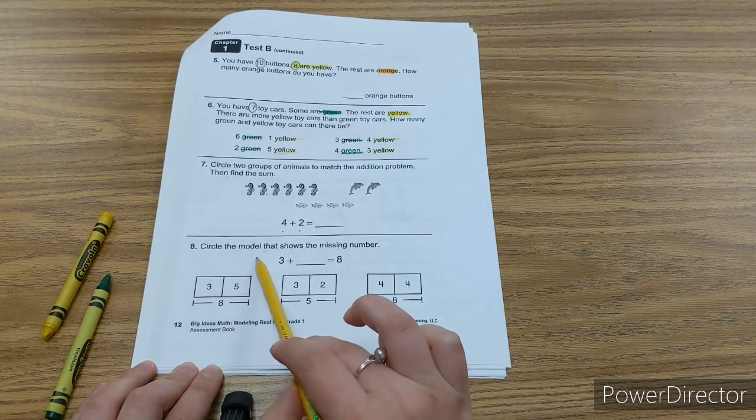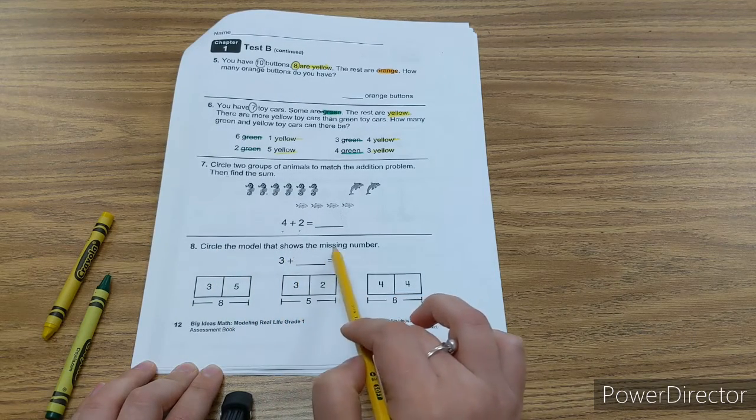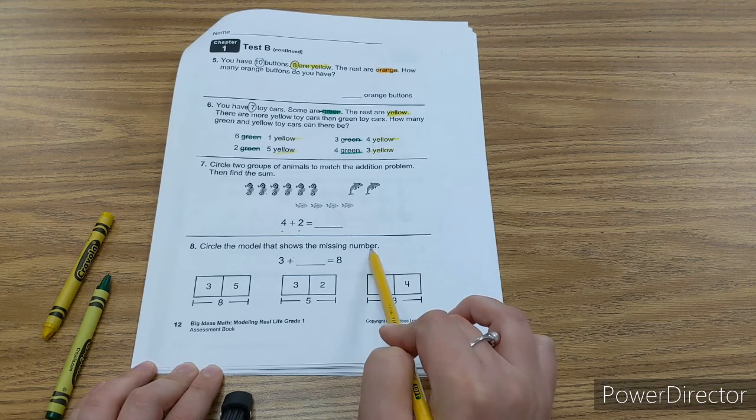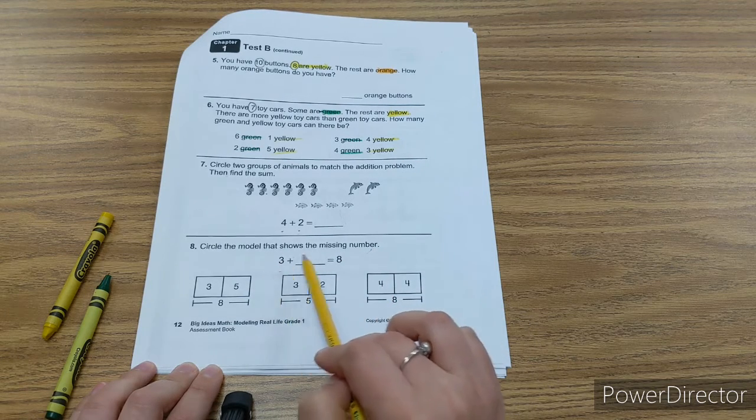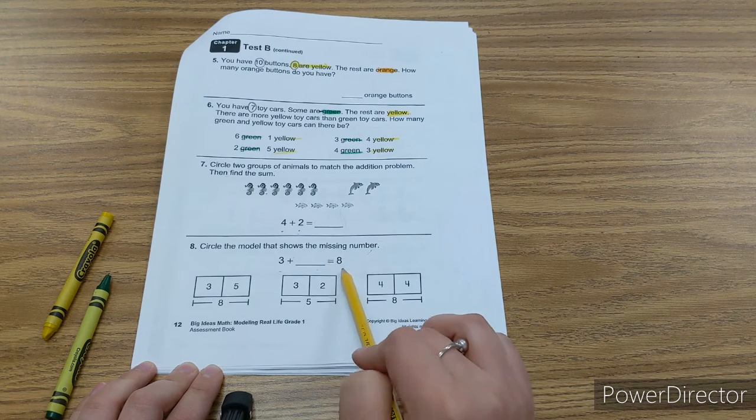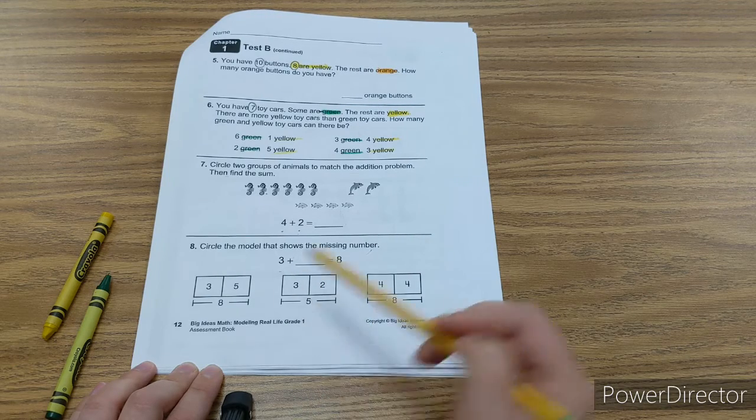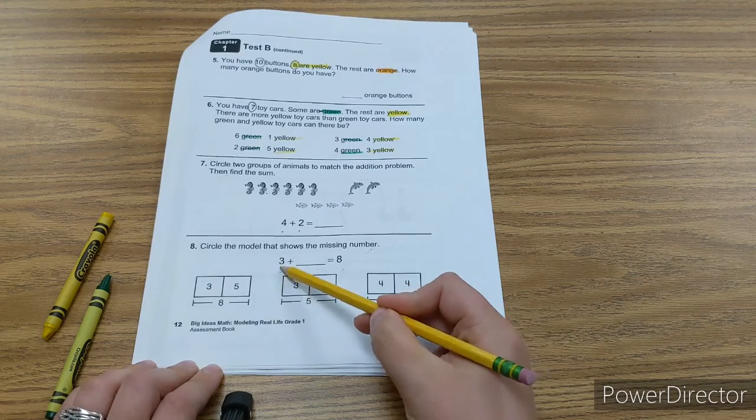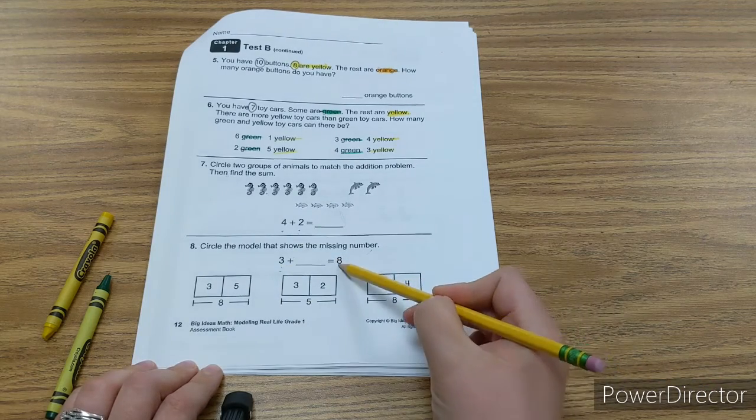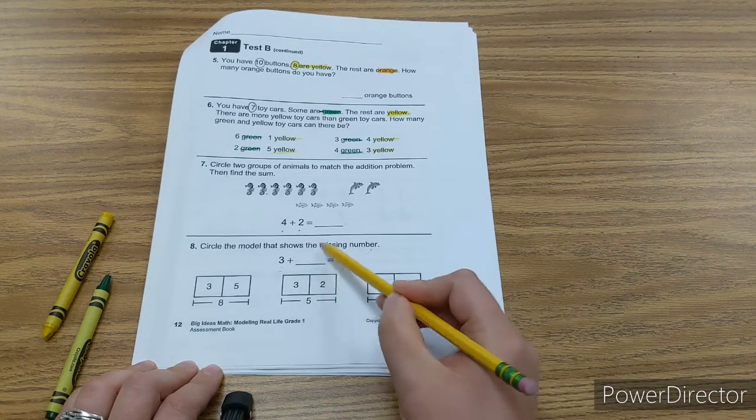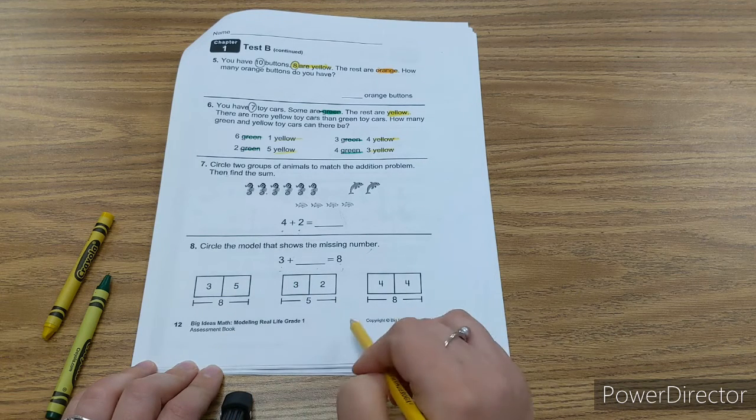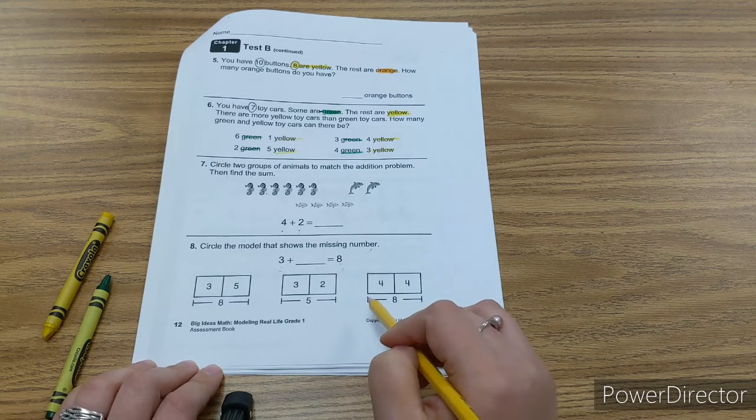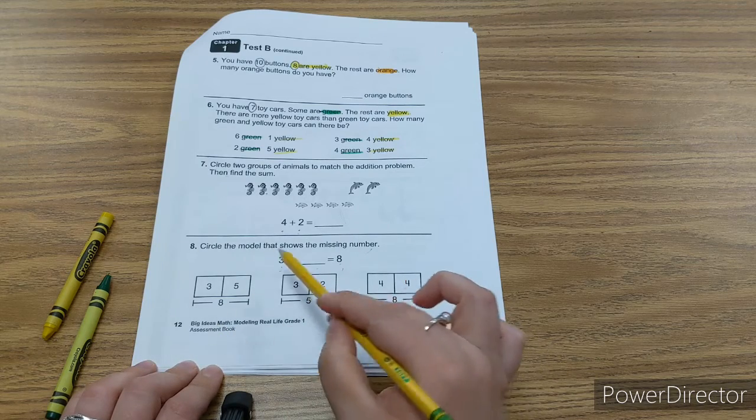Circle the model that shows the missing number. Three plus hmm equals eight. So you know you want to have a three in the problem and you know you want to have an eight in the problem and you're missing one number. If it does not work, you cross it out. If it is the correct one, you circle the answer.